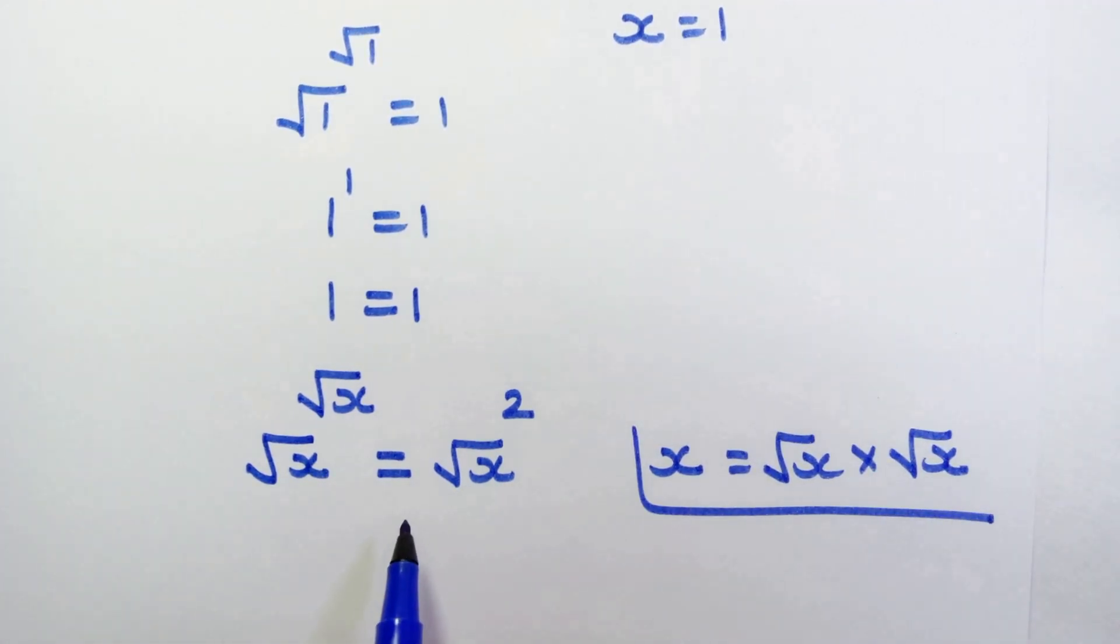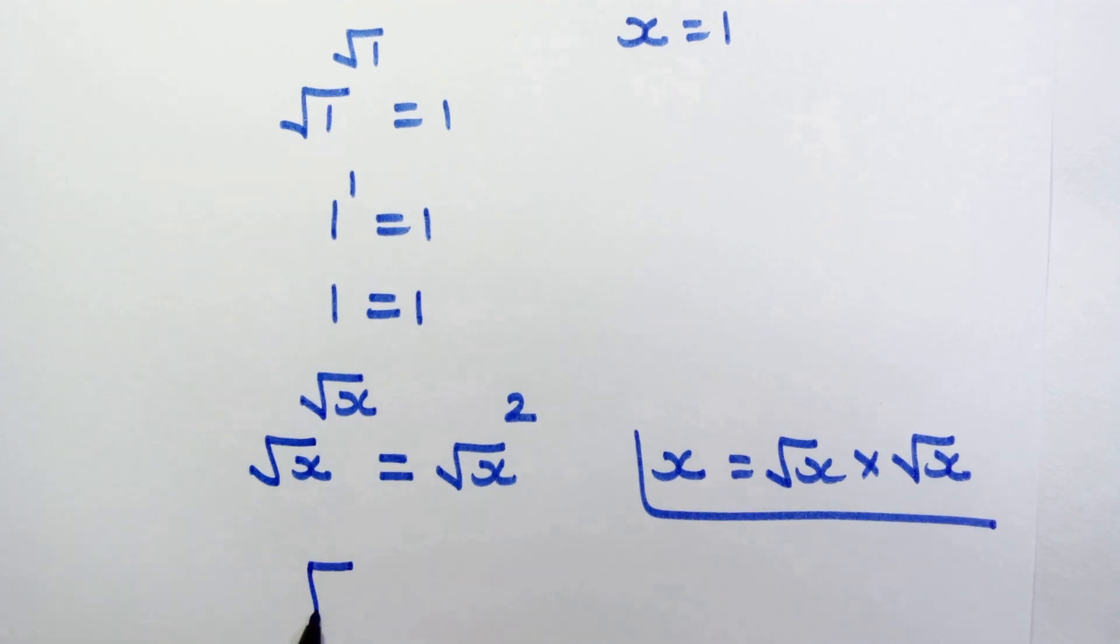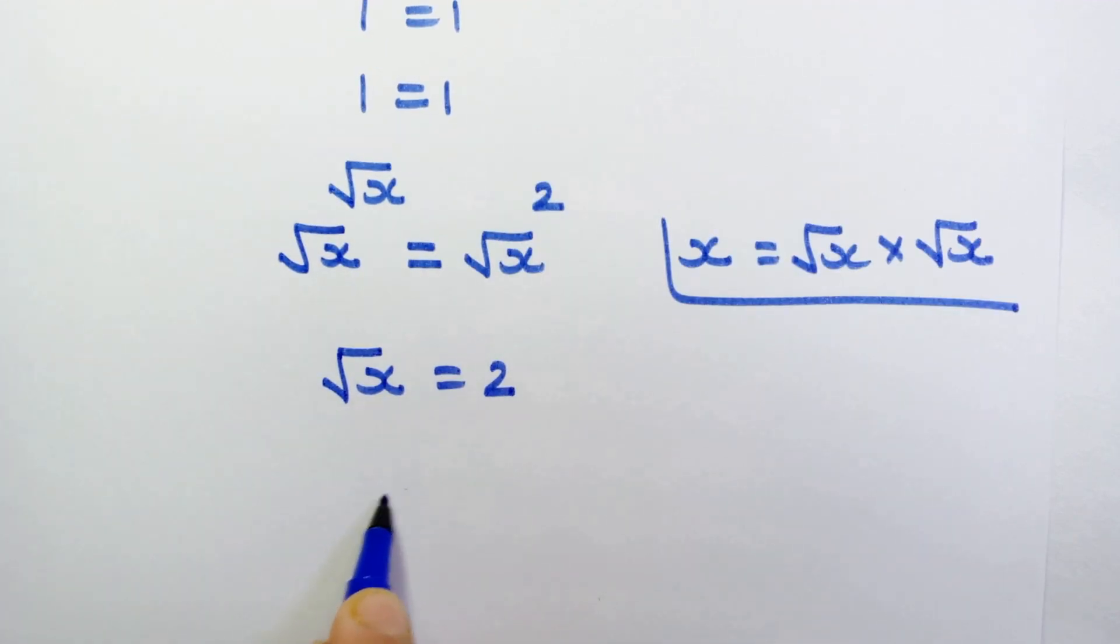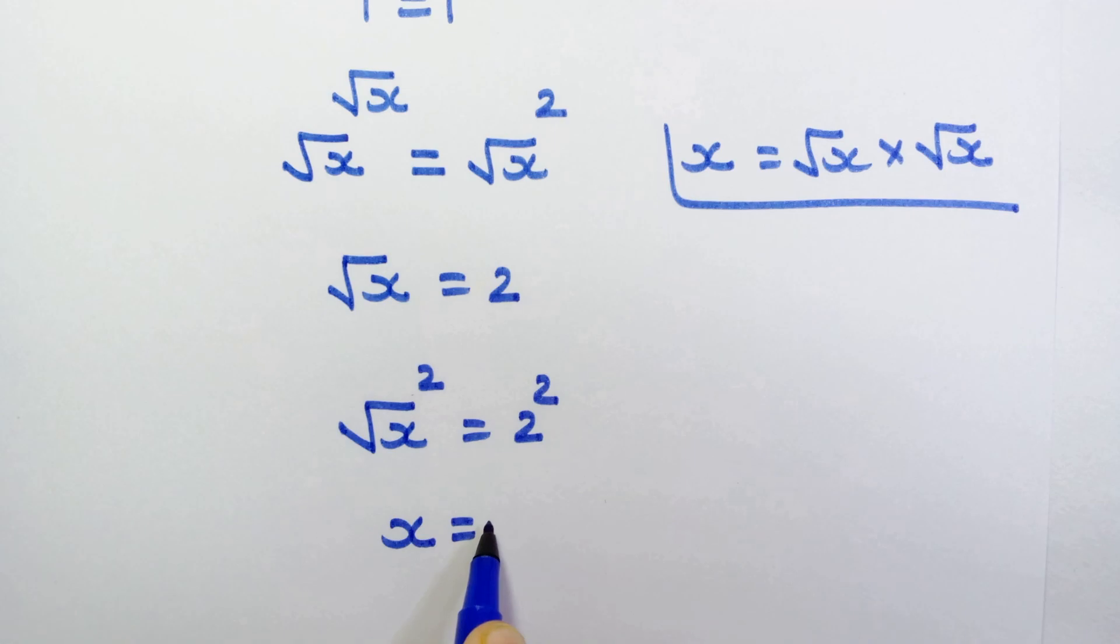We have the same base now. So let's assume √x equals 2. Squaring both sides, √x squared equals 2 squared, so we have x equals 4.